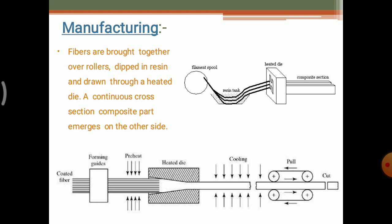The manufacturing process of pultrusion: first, fibers are brought together over rollers and dipped in the resin, then drawn through a heated die. A coated fiber is formed in the forming guides, then preheated and sent to a heating die, and drawn — meaning pulled from the two ends. A continuous cross-section composite part emerges on the other side. After cooling or curing, it is pulled by rollers to the desired cross section and then cut off by the cutoff saw.